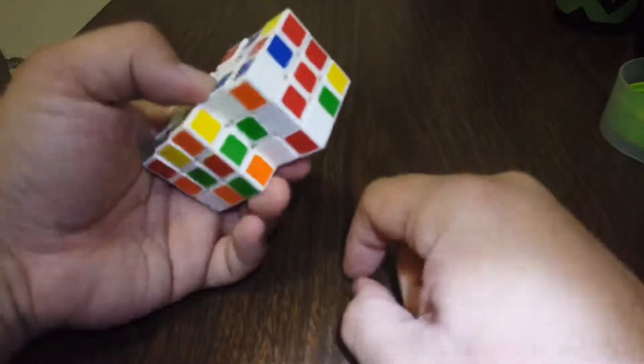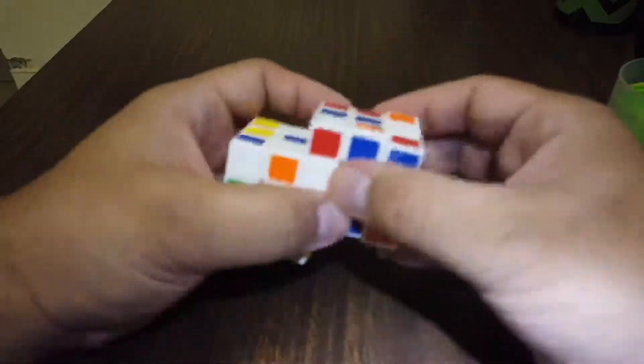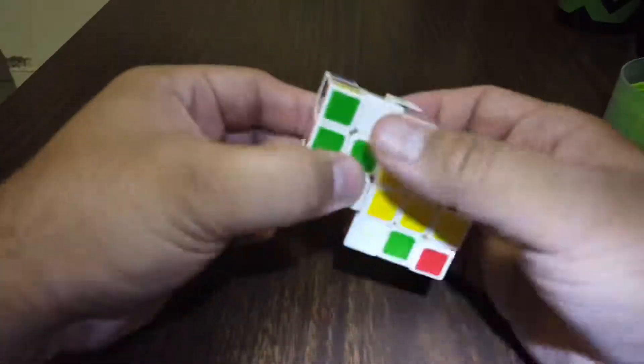I'm going to solve this green layer first. So green and red, that's already done. Where is green and white? Green and white is down here. I got to move it out.